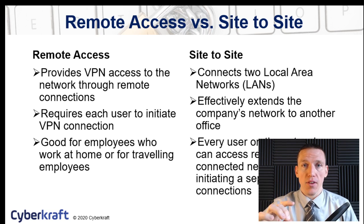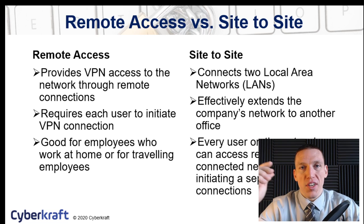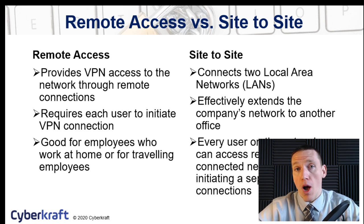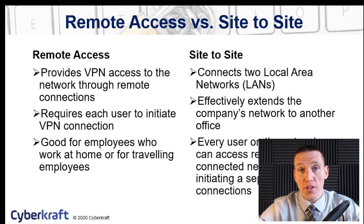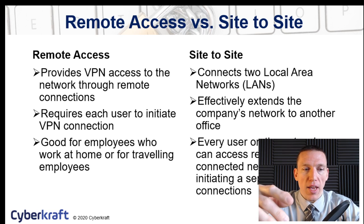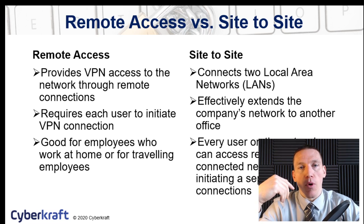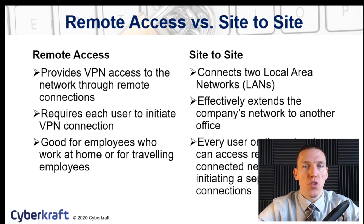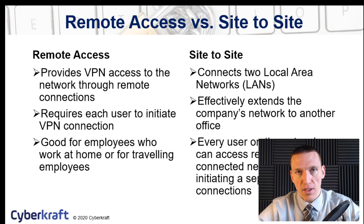There's also a site-to-site VPN. A site-to-site VPN will connect two local area networks — it's a way to extend an organization's secure network to another office. This is useful for a company with geographically dispersed holdings that wants to extend their network across those holdings. With a site-to-site VPN versus a remote access VPN, one connects two networks and the other connects an endpoint to a network. With a remote access VPN, each individual user needs to dial in. In a site-to-site, every user within the connected network can automatically access resources of the other network without individually signing in.